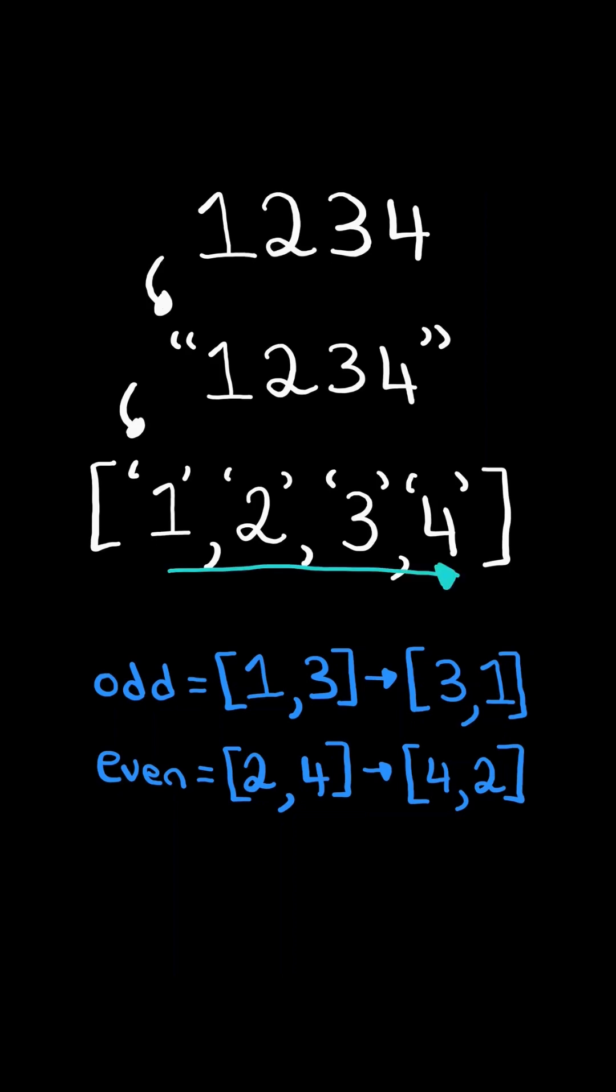We then iterate through the list again, and have pointers at the start of even and odd. If the digit is odd, then we want to swap it with the highest odd number, and advance the odd pointer. And we continue.